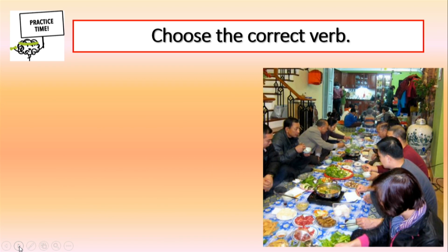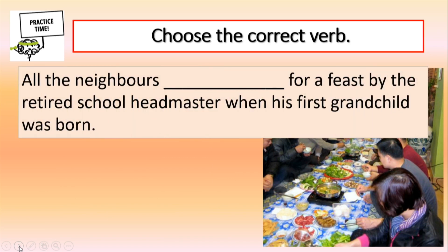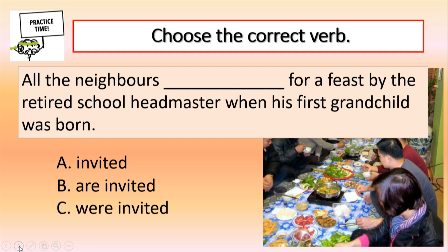Let's do a last one together. All the neighbours for a feast by the retired school headmaster when his first grandchild was born. Is the missing verb invited, are invited, or were invited? Right! The answer is C, were invited. Were, the past simple tense of the verb to be, is used because the event happened in the past — that is, when the grandchild was born.